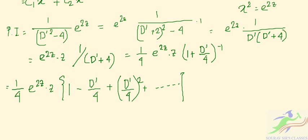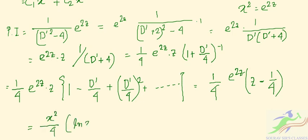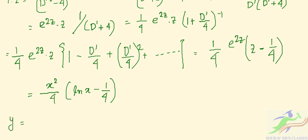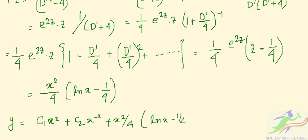Multiplying by z where needed, we get (1/4)e^(2z) times (z - 1/4). Substituting back with z = ln x and e^(2z) = x², the PI becomes (x²/4)(ln x - 1/4). So the general solution is y = c₁x² + c₂x^(-2) + (x²/4)(ln x - 1/4).